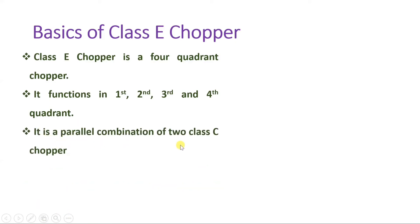Class E chopper is a parallel combination of two Class C choppers. I have already made a session on Class C chopper — you can see that in my previous videos. There you will observe that the circuit of Class C chopper is connected in Class E chopper as two parallel Class C choppers. Class C chopper functions in two quadrants.